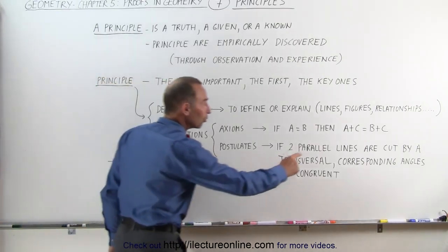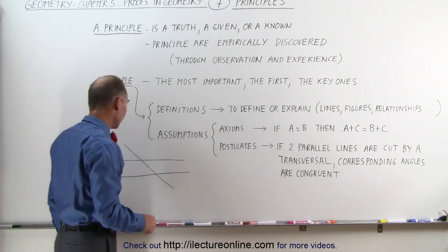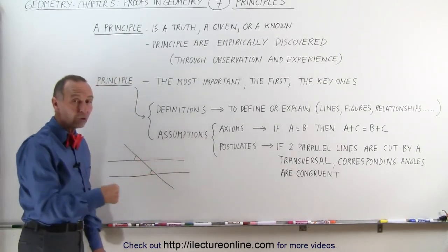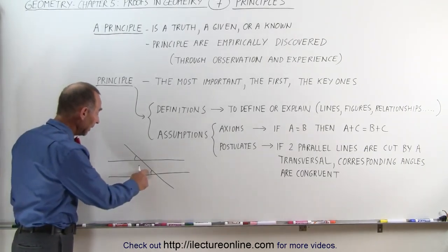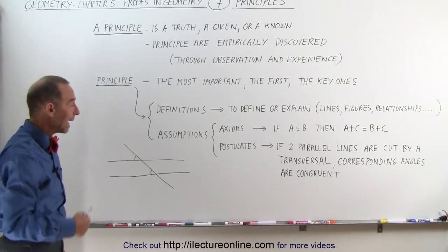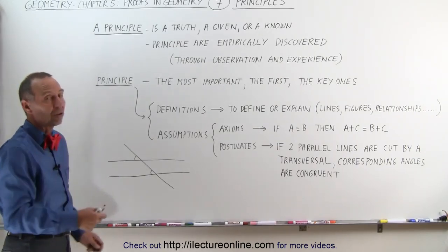then corresponding angles are congruent. What is a corresponding angle? This angle and this angle are called corresponding angles. And they are equal in size, and therefore they're called congruent angles. That is what we call a postulate.